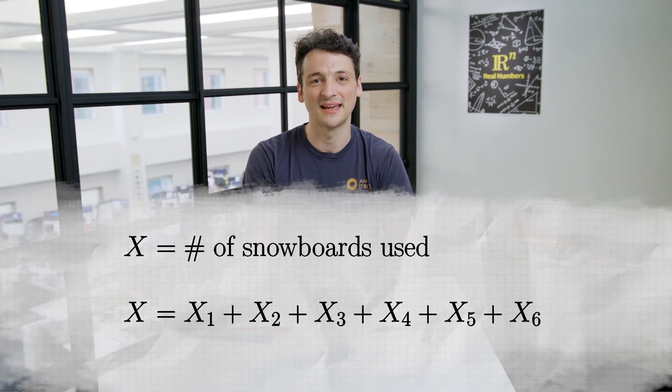For example, we know Rachel has six different snowboards. Let's define x sub i to be the indicator variable that is one if Rachel's ith snowboard is used at some point during the week. This means the total number of snowboards that get used is just the sum of the x sub i.